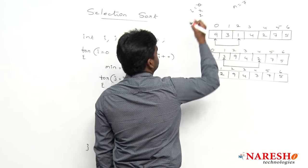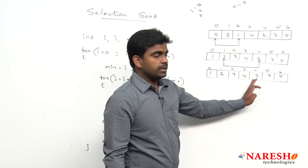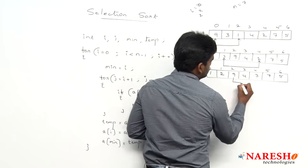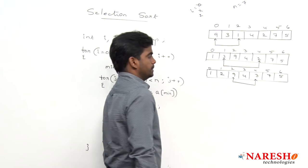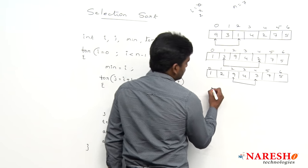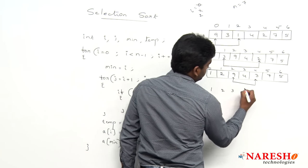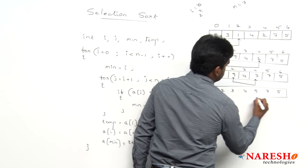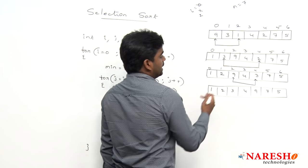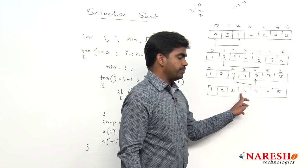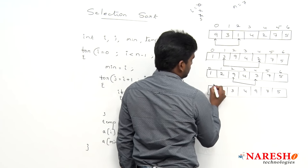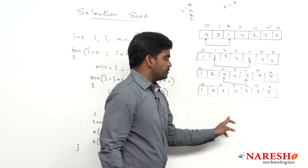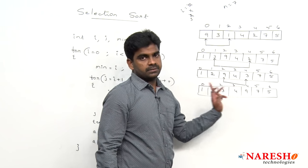When i value becomes 2, the next index is compared with the next least element, which is 3. So 9 and 3 will swap, giving us 1, 2, 3, 4, 9, 7, 5. When i value is 3, the next least element is 4 itself, so it swaps with itself — no change.